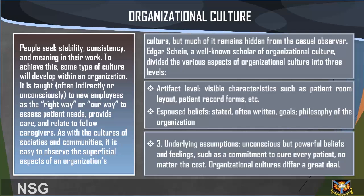The first level is Artifacts: visible characteristics such as patients' room layout and patient record forms. The second level is Espoused Beliefs: stated, often written goals and philosophy of the organization. The third level is Underlying Assumptions: unconscious but powerful beliefs and feelings, such as a commitment to cure every patient no matter the cost.